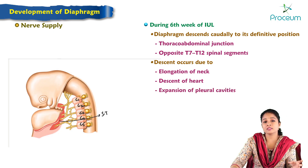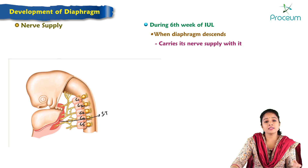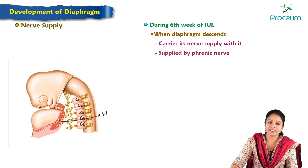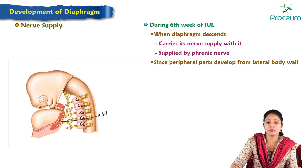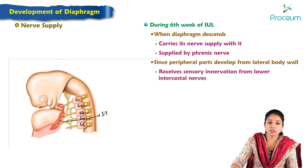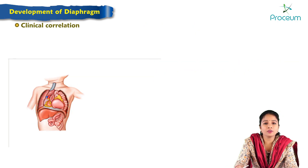The descent of the diaphragm occurs due to elongation of the neck, descent of the heart, and expansion of the pleural cavities. When the diaphragm descends, it carries its nerve with it; hence the diaphragm is supplied by the phrenic nerve. Since the peripheral parts of the diaphragm develop from the lateral body wall, they receive sensory innervation from the lower intercostal nerves.